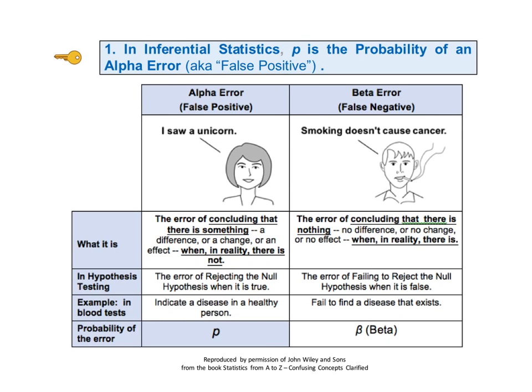In inferential statistics, P is the probability of an alpha error. It is probably easier to understand it as a false positive. Other names for alpha error are type 1 error or error of the first kind. Its opposite is a beta error or false negative. An alpha error is the error of seeing something that is not there — the error of concluding that there is a difference, change, or effect when in reality there is not. In hypothesis testing, it is the error of rejecting the null hypothesis when the null hypothesis is true.